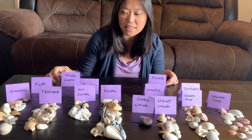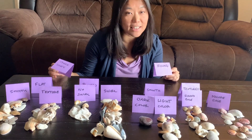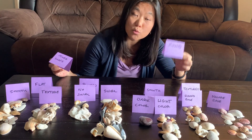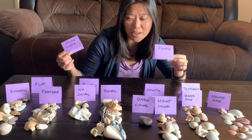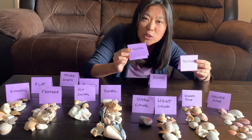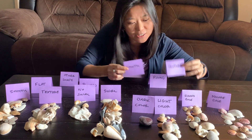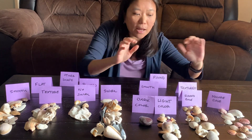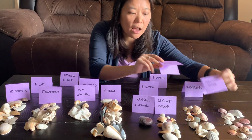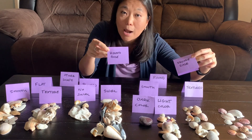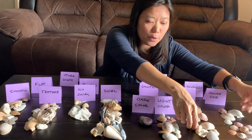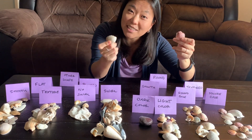What you'll see is the first thing that I did with my shell collection is I looked at them and made the distinction between whether the shape was round or a different shape. Then with my round shells I looked at which ones were smooth and which ones were textured, and I was even able to organize them further. My textured shells I organized by which ones had a round base and which ones had a square base, which got me groupings of these different kinds of shells.